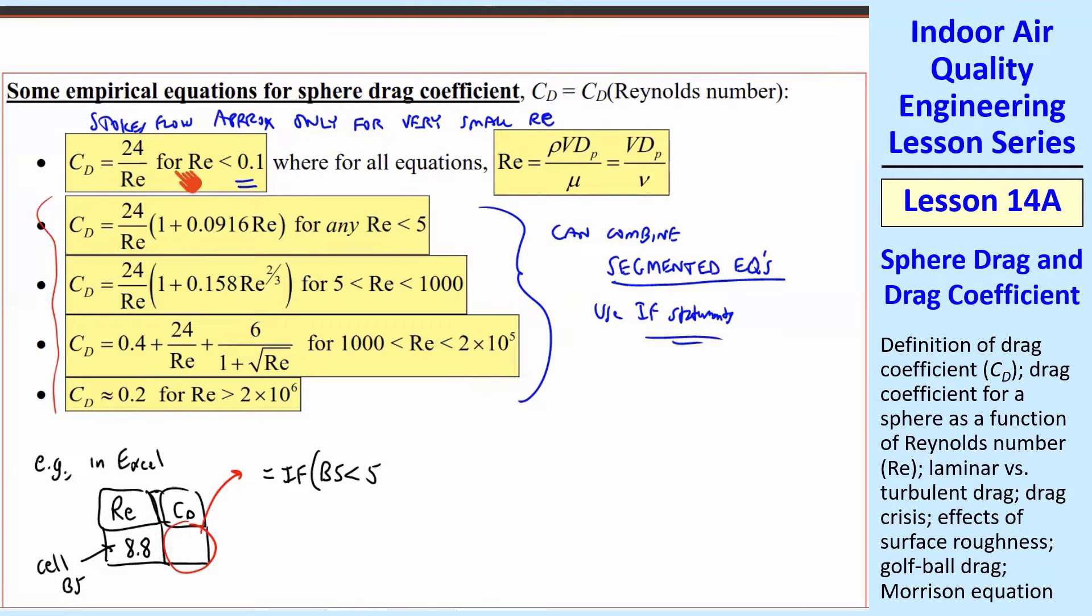I would say equal if, and then I'm assuming that this is cell B5. So you click on that cell, it'll put a B5 there, which it has the value of 8.8. But in the equation, it'll look like this. If B5 is less than 5, so we're taking this first equation here. Ignore this one. We're not going to use this one. So if B5 is less than 5, we want to use this equation. So then I put that equation, comma, 24 times 1 plus 0.0916 times Reynolds number, which again is B5, parentheses closed, divided by B5 because of this Reynolds number in the denominator. And then I put a comma.